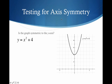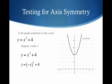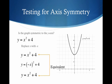Let's test for axis symmetry. Is this graph symmetric to the y-axis? We are going to replace x with negative x. You can see I substitute in negative x for x. What happens when I square a negative? It just goes away. And you can see that I end up back with my original equation. So yes, this function has y-axis symmetry. We can look at the graph and certainly tell that we have a mirror image on the other side of the y-axis.